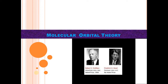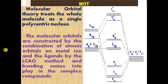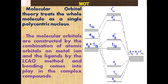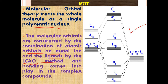Molecular orbital theory was first proposed by Hund and Mulliken. In molecular orbital theory, the whole molecule is treated as a single polycentric nucleus. The molecular orbitals are constructed by the combination of atomic orbitals on the metal and ligands using the linear combination of atomic orbitals (LCAO) method, and bonding comes into play in the complex compounds.